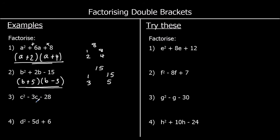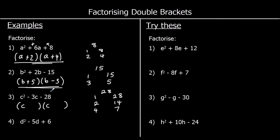The third example: c squared minus 3c minus 28. We can have a c in each of the brackets. What multiplies to make 28? So 1 times 28, 2 times 14, 4 times 7. We want two numbers that multiply to make negative 28 and add to make negative 3. Our only option is 4 and 7, so we're going to have a positive 4 and a negative 7. 4 take away 7 is negative 3.